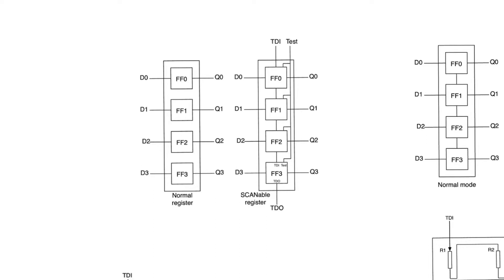We took a look at how to transform a normal flip-flop into a scan flip-flop. Now let's look at how the scan flip-flop can be used to create a scan register, which is a multi-bit register, and how that can be used to increase controllability and observability within chips containing synchronous pipelines. This is a normal four-bit parallel register that accepts a multi-bit input word and produces a multi-bit output word synchronously.